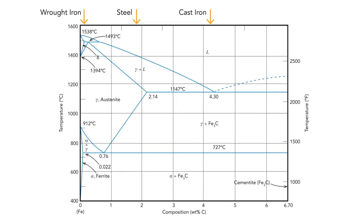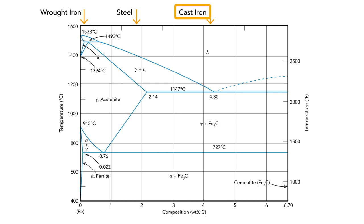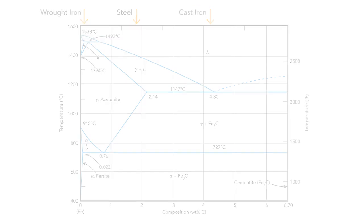To understand why these three different regimes exist, you have to look at the iron-carbon phase diagram. Way over on the left near pure iron, a very small amount of carbon is soluble — that's the wrought iron phase, and the melting point is extremely high. When you add between 0.2% and 2.3% carbon and heat it to high temperatures to form austenite, you can dissolve the carbon into the material more easily, because austenite is a face-centered cubic phase. That's the steel region. Above 2.3% carbon, you're in cast iron territory, where excess carbon precipitates out in various phases, making the material very brittle.